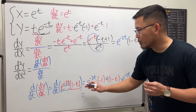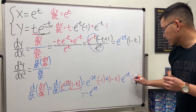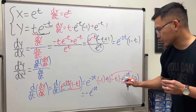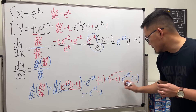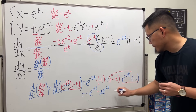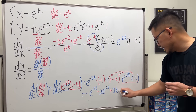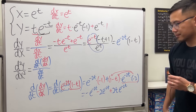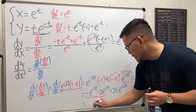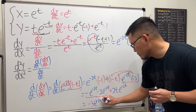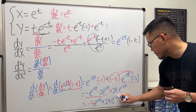Now let's clean this up. The first term is just negative e to the negative 2t. For the second term, distribute: negative 2 times 1 gives negative 2·e to the negative 2t, and negative 2 times negative t gives positive 2t·e to the negative 2t. Notice the first two terms can be combined: negative 1 and negative 2 give negative 3·e to the negative 2t. So we have negative 3·e to the negative 2t plus 2t·e to the negative 2t.